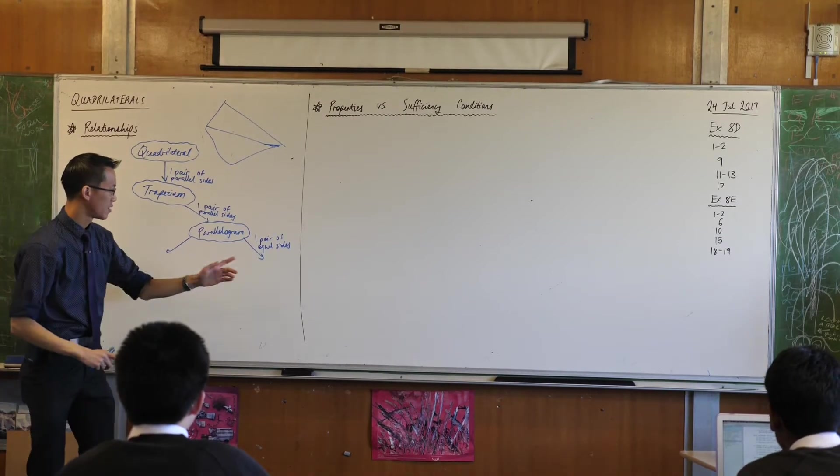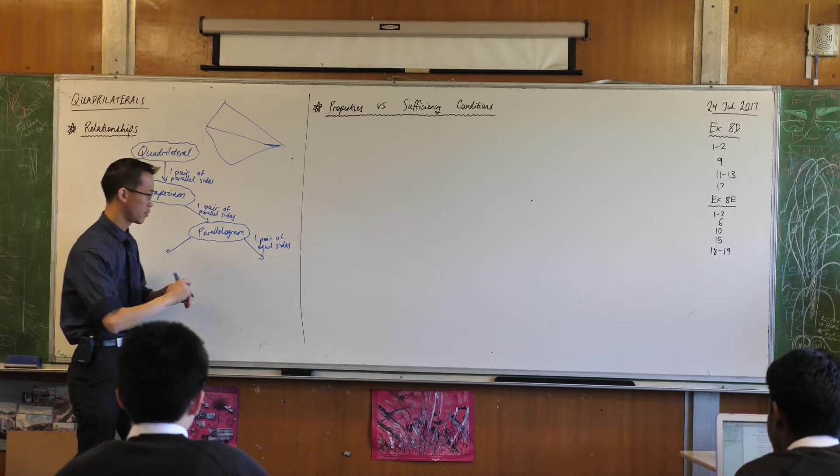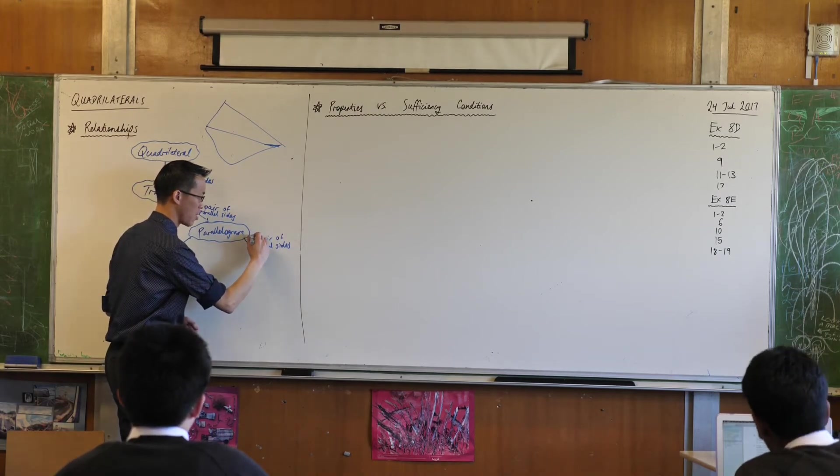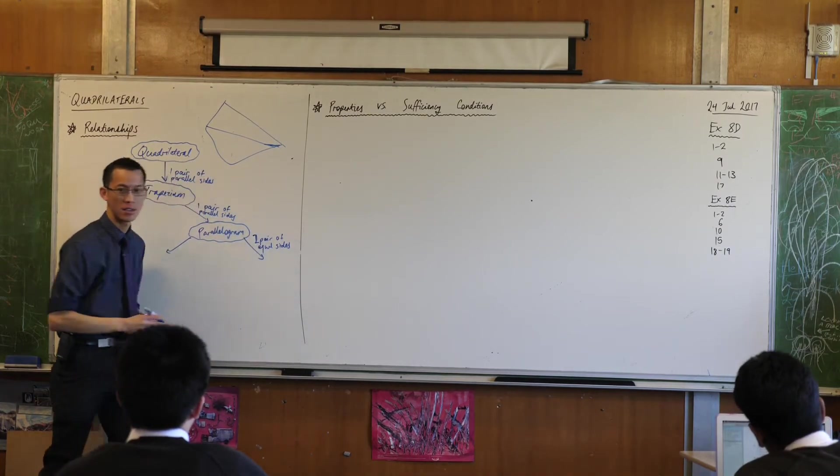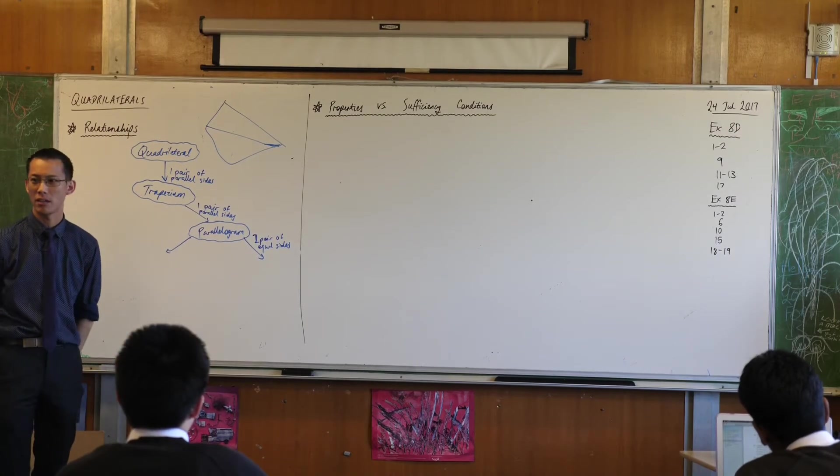So in fact to add one pair of equal sides you've already got those. What you really are thinking of is two pairs of equal sides that are equal to each other. What does that mean?